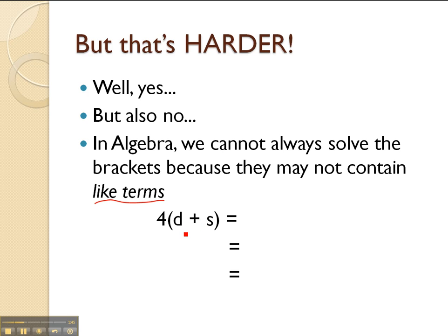But what if we had the pronumerals D and S like we have in this case. Looking at this equation we've got 4 outside of the brackets of D plus S. We can't solve this using BIDMAS because we can't add unlike terms. D and S are not the same.